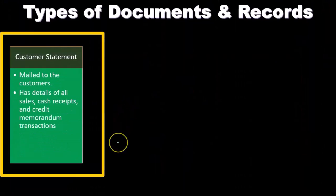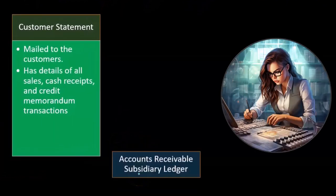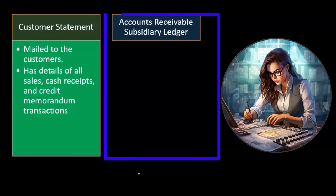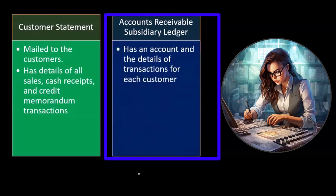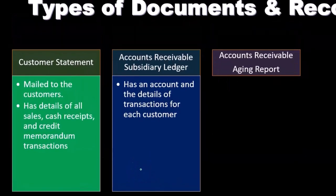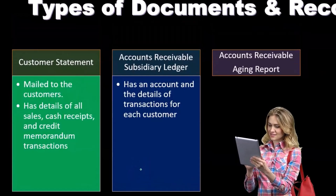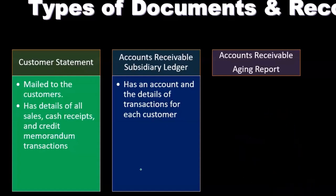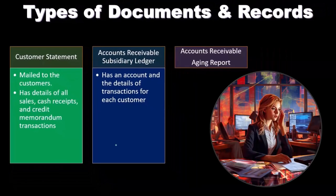The customer statement, mailed to customers, has details of all sales, cash receipts, and credit memorandum transactions. The accounts receivable subsidiary ledger is really important when we consider the sales process and auditing of accounts receivable - it has an account and detail of transactions for each customer. Accounts receivable represents what is owed to the company by customers, broken out not just on the general ledger by date, but also by subsidiary ledger broken out by customer.